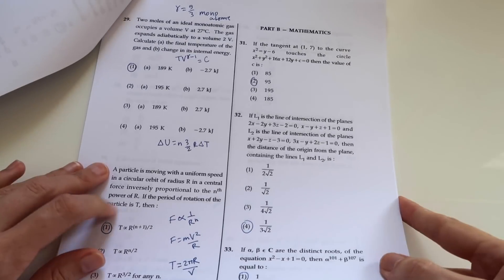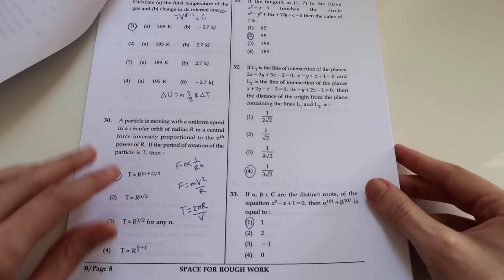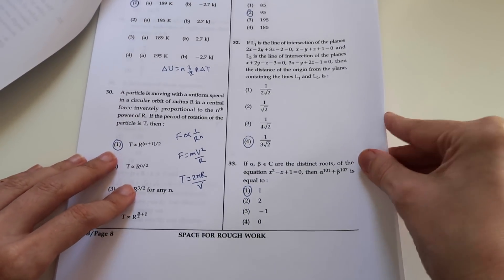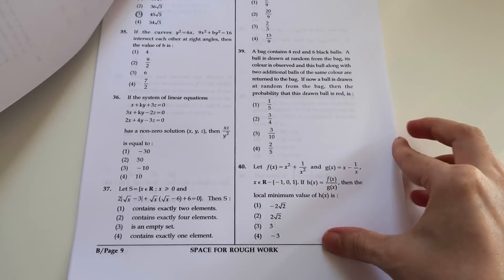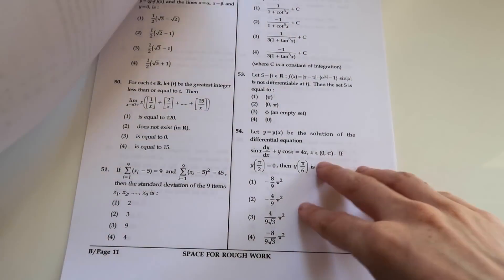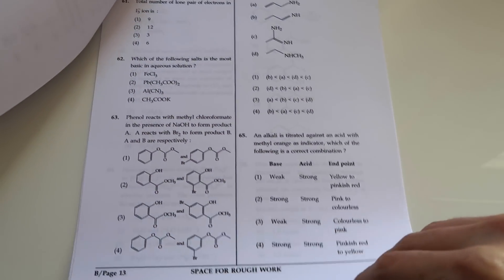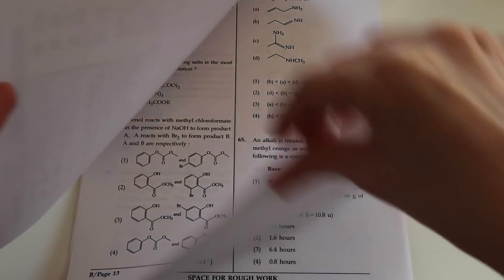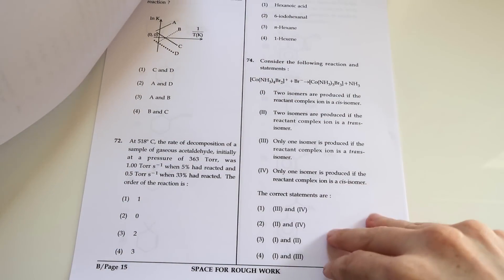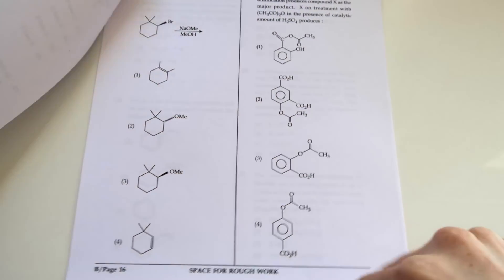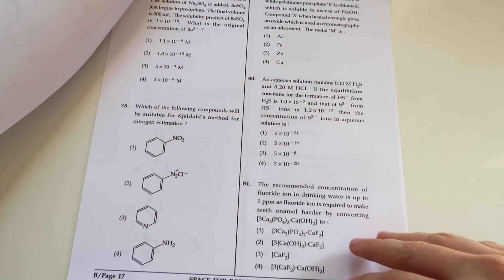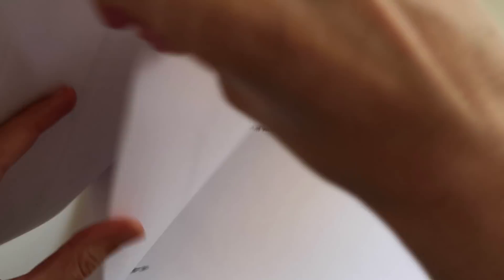It then goes on to the math section, but like I said, to keep this video from being too long, I won't go through that in detail. We can have a little flick through. It's, I guess, just as long as the physics section, and then we also go on to chemistry. You can see the diagrams coming in here. So that's a little glimpse at what the syllabus is like if you're doing an exam here in India, if you're doing JEE Mains.